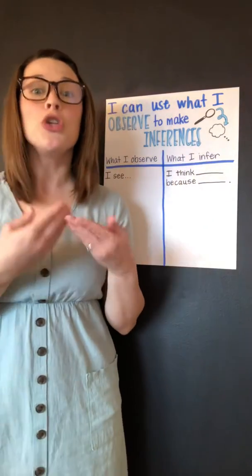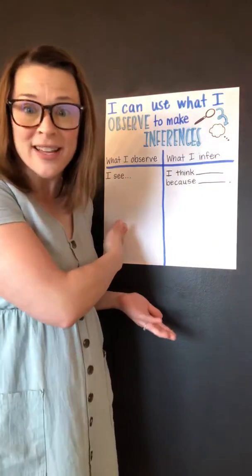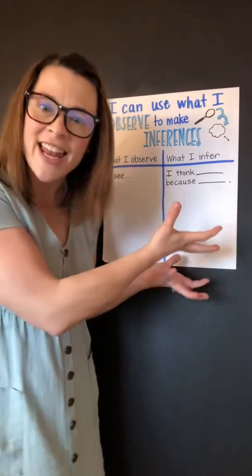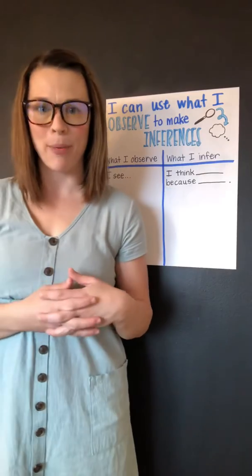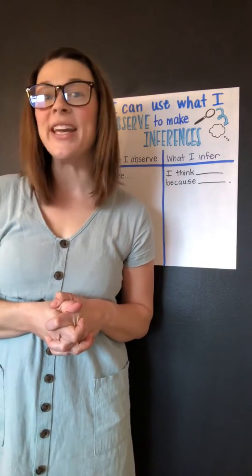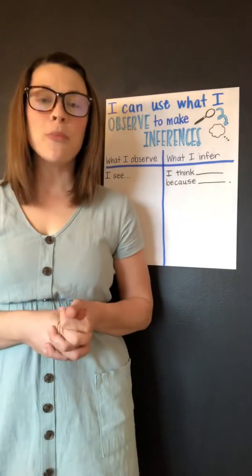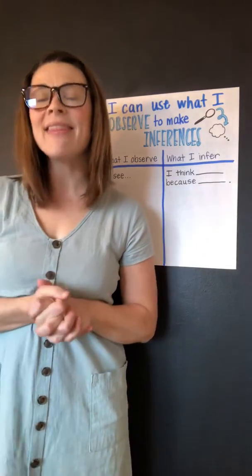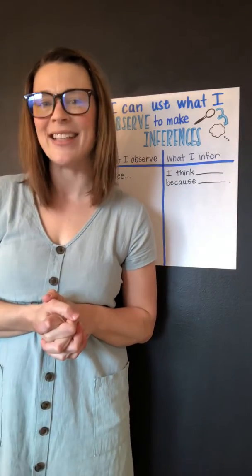So you can use your I see sentences, what you observed, to fill in and tell me why you think something. So here's an example. I think it's a beach because I see sand. You might also say, I think the family is on vacation because I see waves.